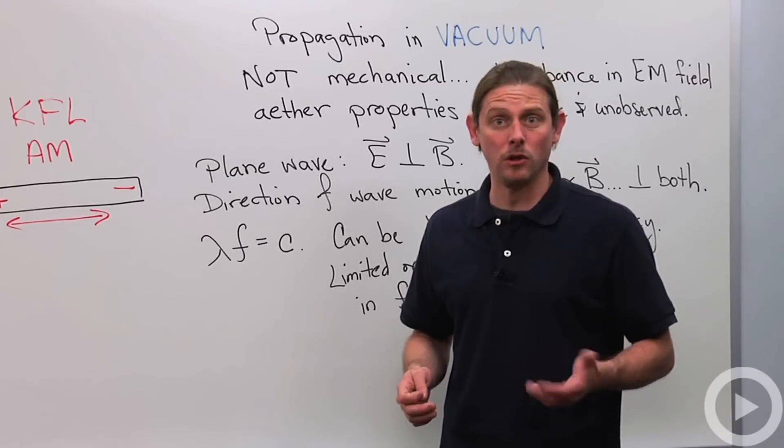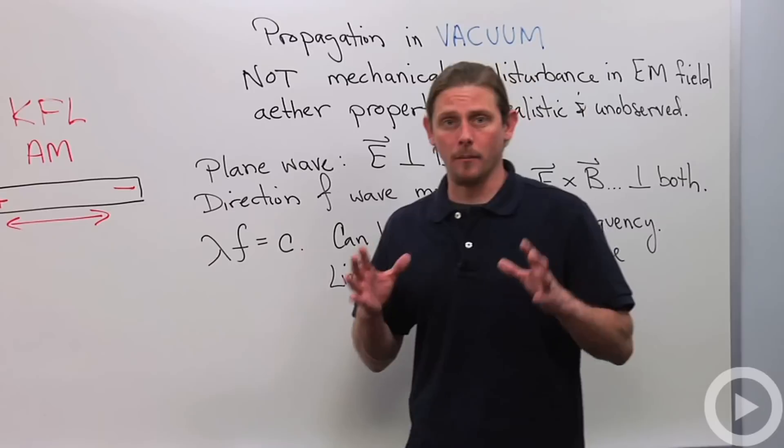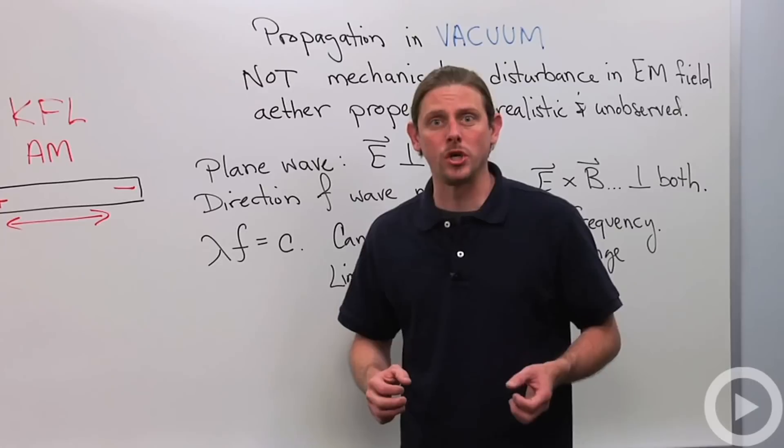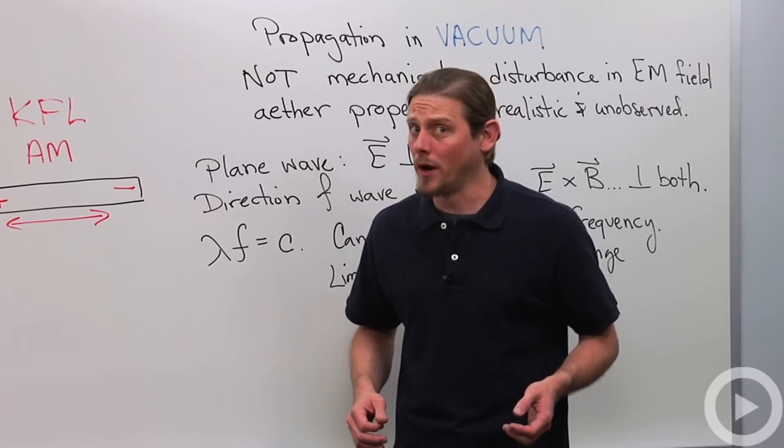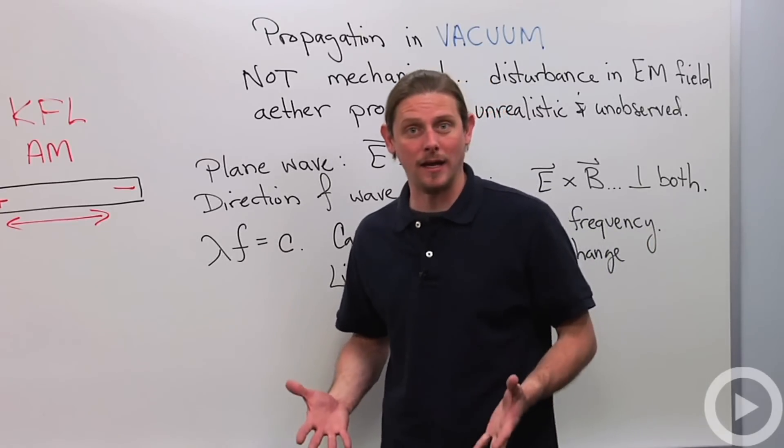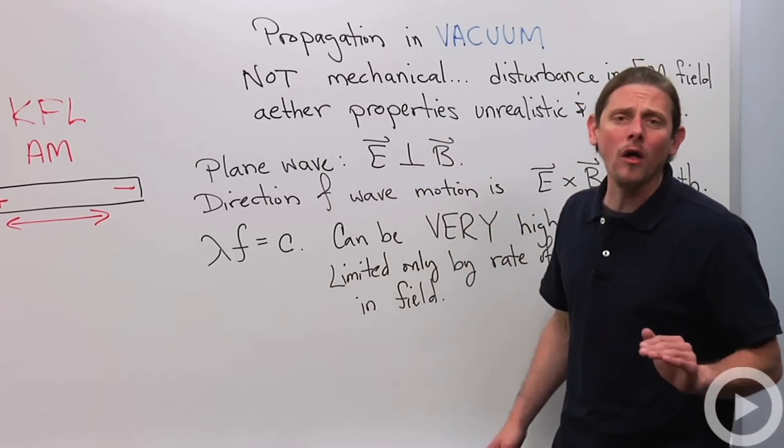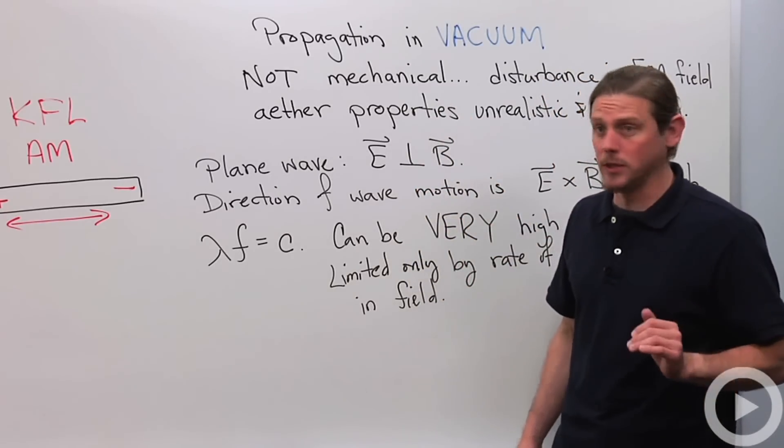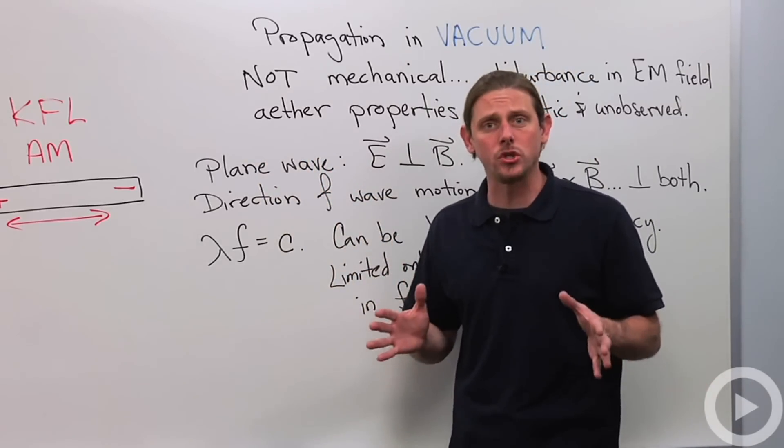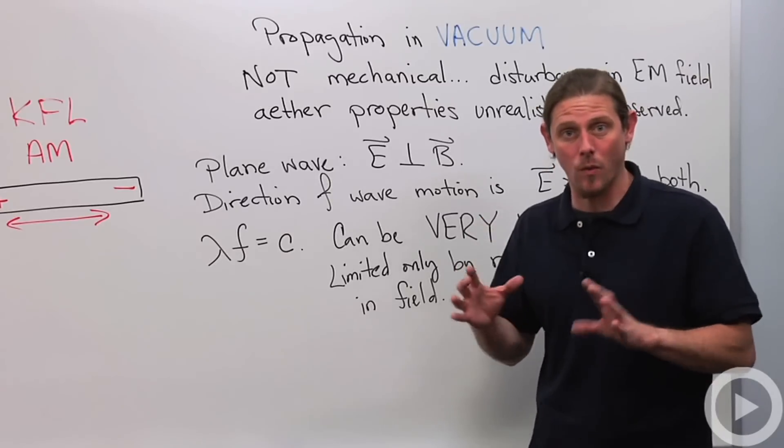sound waves propagate through aluminum at about 5100 meters per second. So we're going to need a material that's so much lighter than aluminum and yet so much more rigid that it supports speeds not 5100 meters per second, 300 million meters per second. And that's just unrealistic and furthermore all the times that we have tried desperately to observe this ether we haven't seen anything. And so what that leads us to believe is that this really is a disturbance in the electromagnetic fields and not a mechanical wave at all.